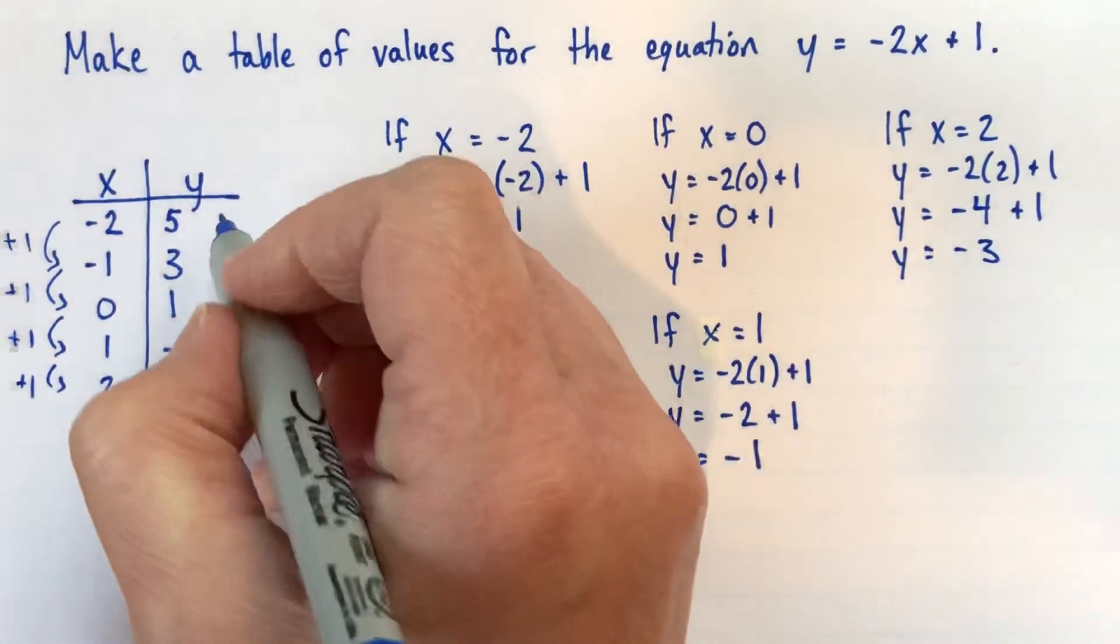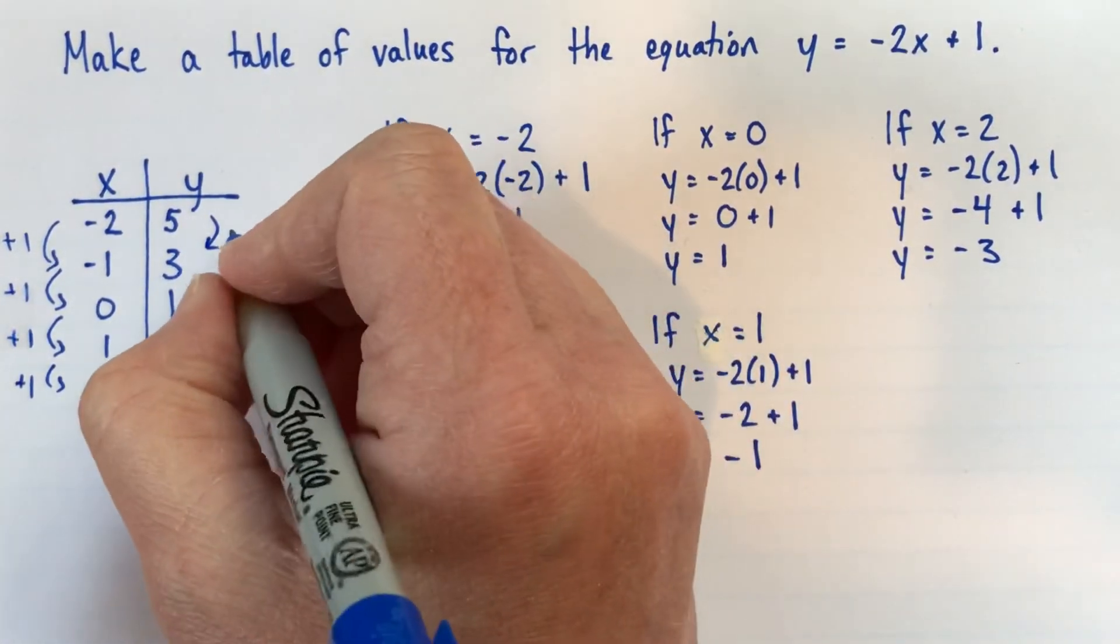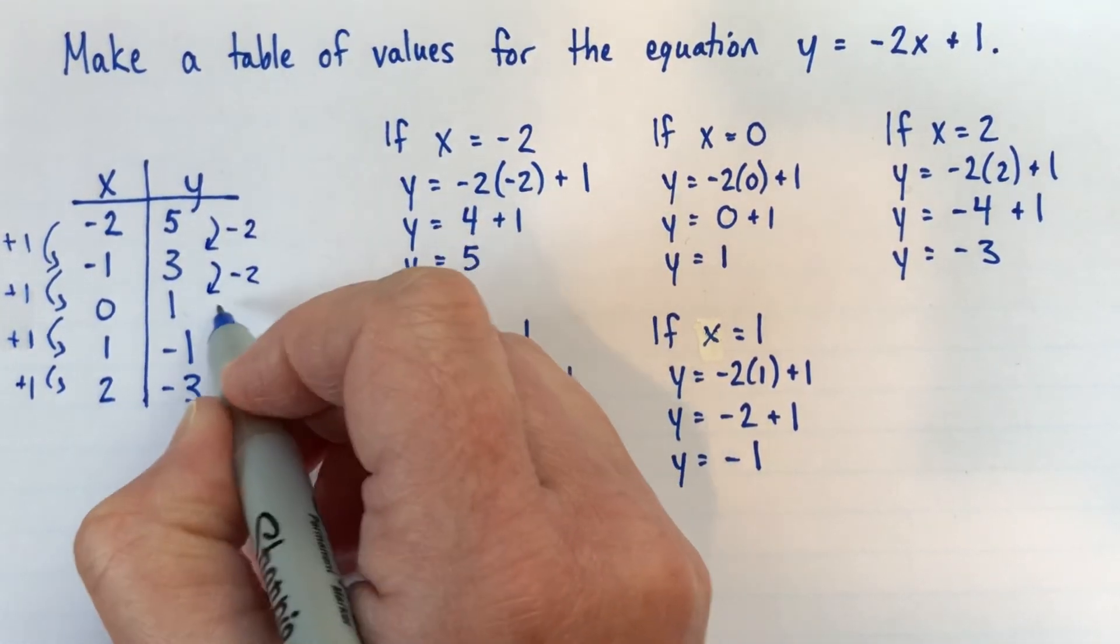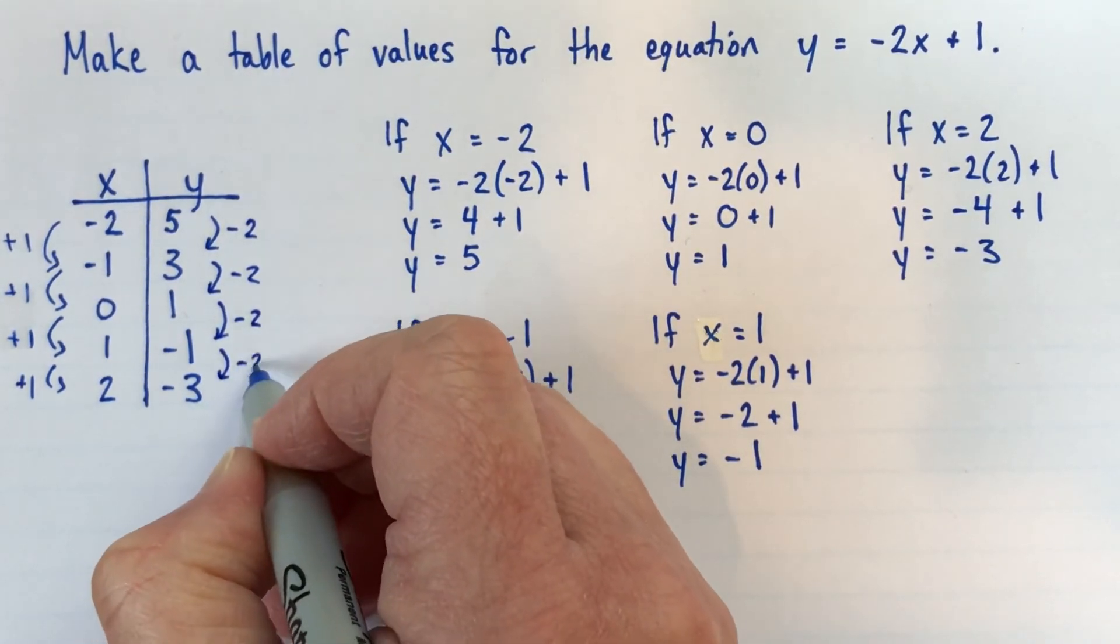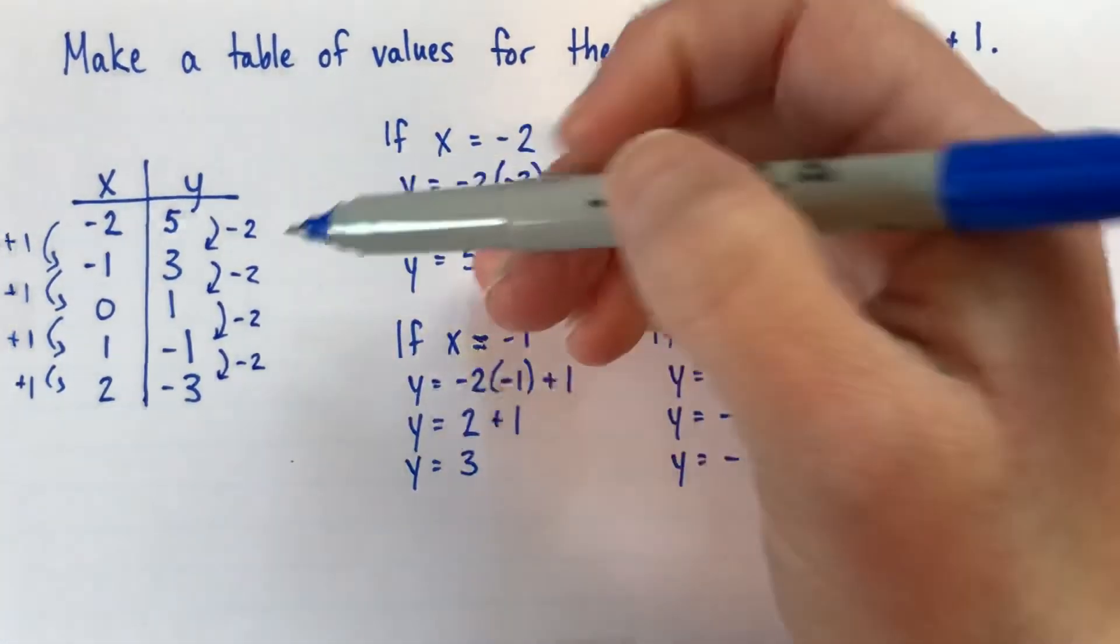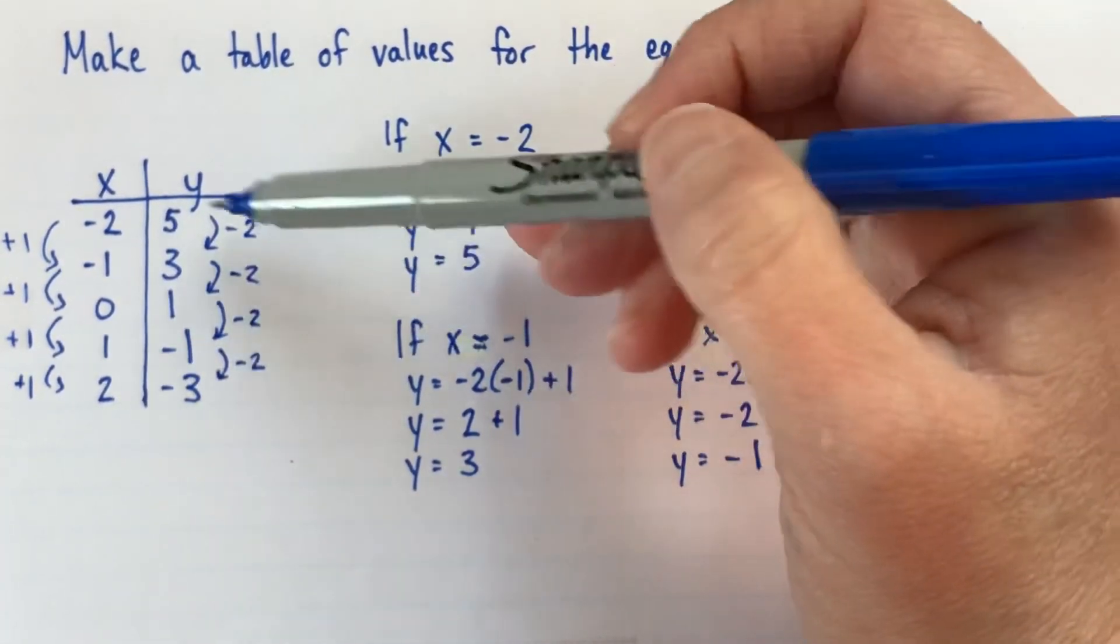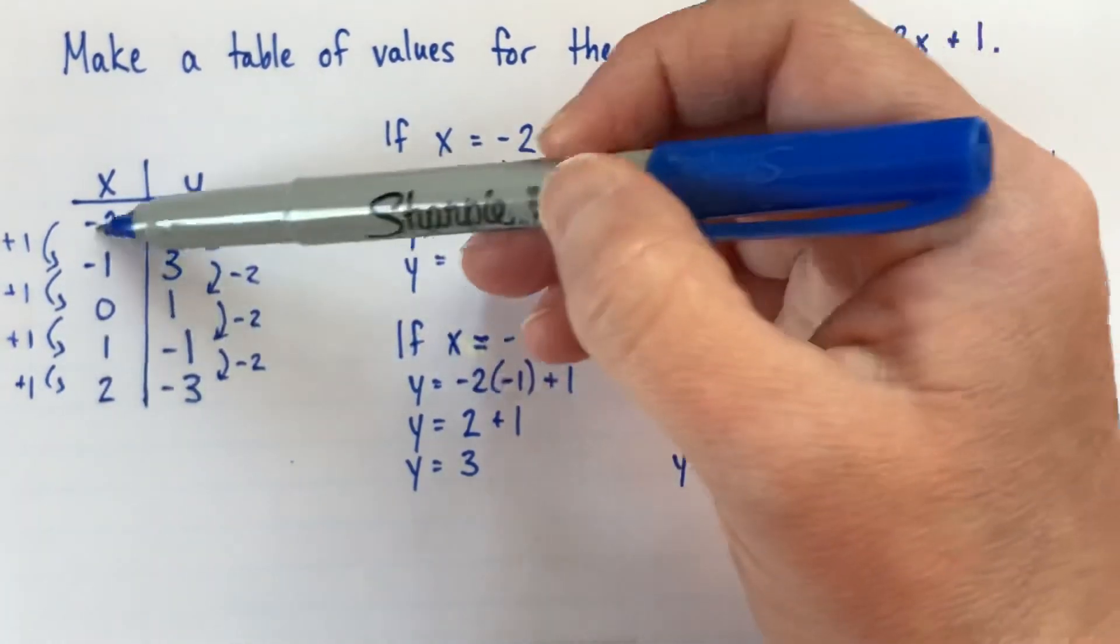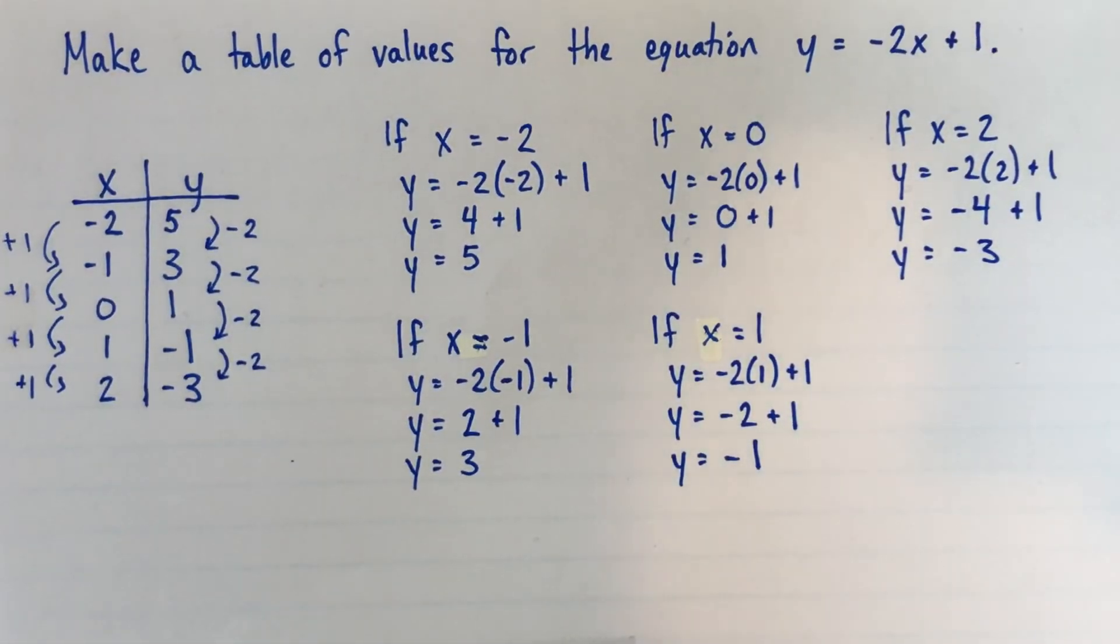And then with the y's. So this is a decreasing pattern. My y's are getting smaller. So I went down 2. And here again, down 2. Down 2. And down 2. So it doesn't matter if it's increasing or decreasing, just in terms of checking if we've made any mistakes. As long as these ones are doing the same thing as each other, these ones should also be doing the same thing as each other. Alright.